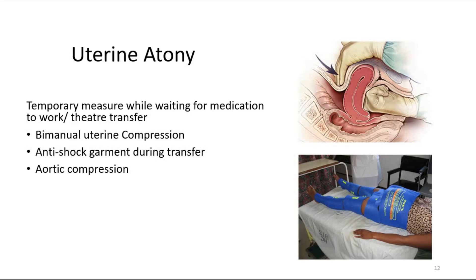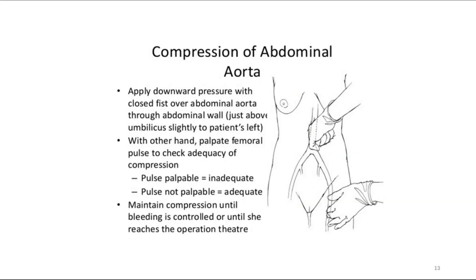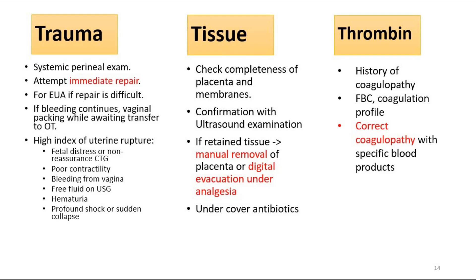This picture shows the steps of compression of the abdominal aorta. If the cause is not tone, look for other causes such as trauma, tissue, and thrombin. For trauma, perform a systematic perineal examination and attempt immediate repair. If bleeding continues, do vaginal packing while awaiting transfer to the operating theatre.